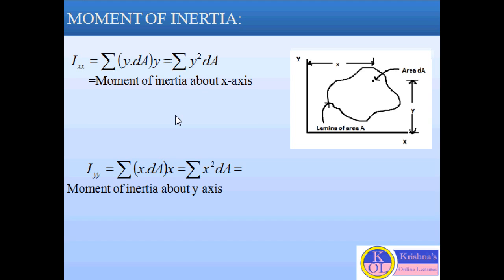The elemental area is DA. If we consider IXX as the moment of inertia about the X axis, it will be the second moment of area, equal to the summation of Y·DA — this is the moment of area — and if we multiply by Y, the distance from the X axis, it becomes the second moment of area. So IXX equals summation of Y square DA.